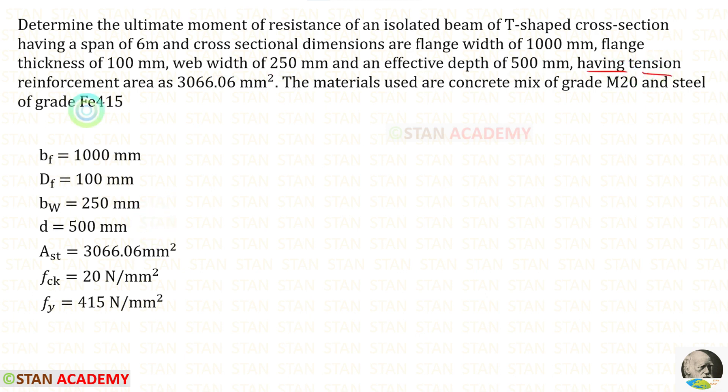Having tension reinforcement area as 3066.06 millimeters squared, AST is given. The materials used are concrete mix of grade M20, FCK equals 20, and steel of grade FE 415, FY equals 415.